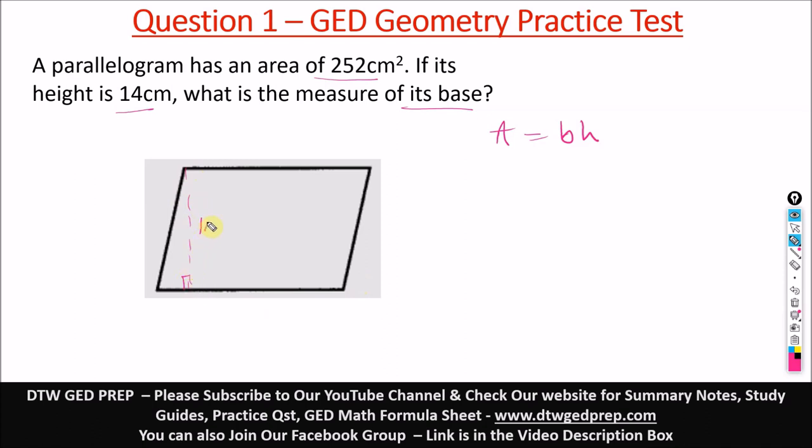If the height is 14 centimeters, what is the base? We've been given the area, so A equals 252 and our height h equals 14 centimeters.